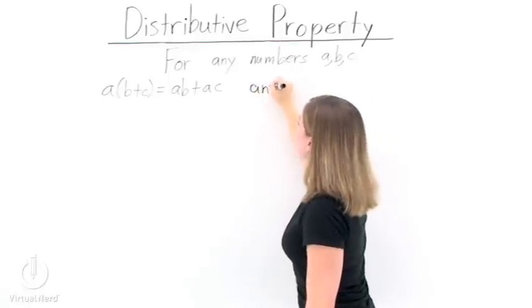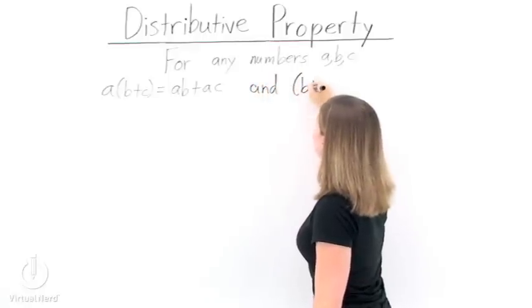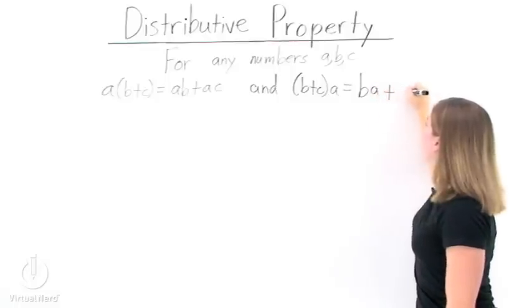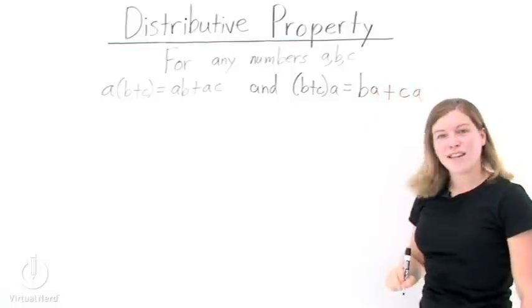Now we can go the other way as well, having b plus c first and a second. If we use the distributive property on this, we end up getting b times a plus c times a.